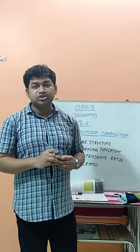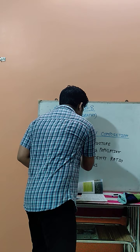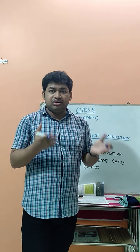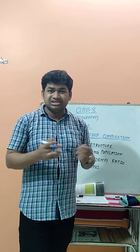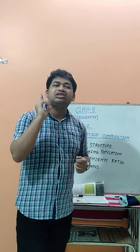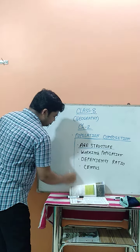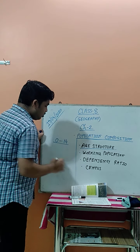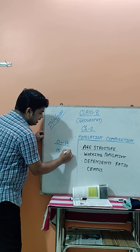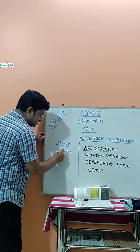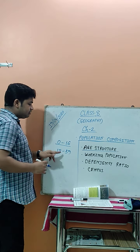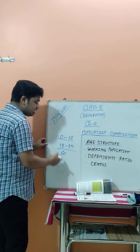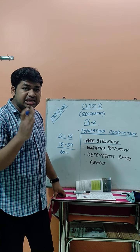Today we are going to discuss the first one: age structure. This is a very important topic. In our society, not all people are the same age, so age structure is divided into three parts. The first group is people aged 0 to 14 years. The second group is 15 to 59 years, or you can say 18 to 59 years. The third stage is those who are more than 60 years old.